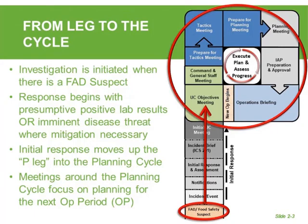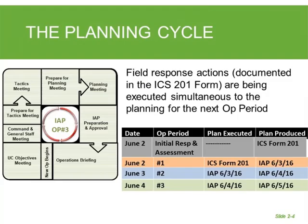Just to recap from last time, we started at the stem of the P and worked our way up, which is the leg of the P. For us, a foreign animal disease investigation is initiated when we have some sort of FAD suspect. Our response begins with either a presumptive positive laboratory result, or we may get an imminent disease threat where mitigation is necessary and we need to do some activity, maybe surveillance or stop movement in our state. The initial response moves up the leg of this P, and when it gets to the top of the arrow, this becomes a cycle that is continuous throughout the response.